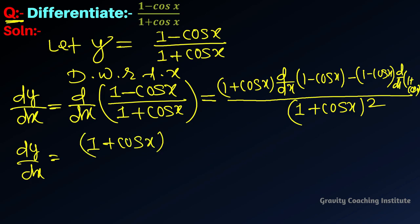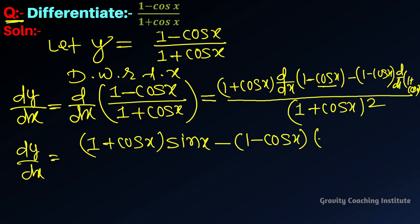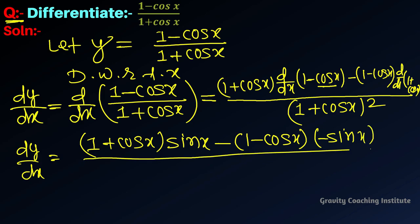तो cos x का differentiation होता है minus sin x। और इसमें already minus है, तो यह minus minus plus हो जाएगा। और इस cos x का होगा minus sin x upon।